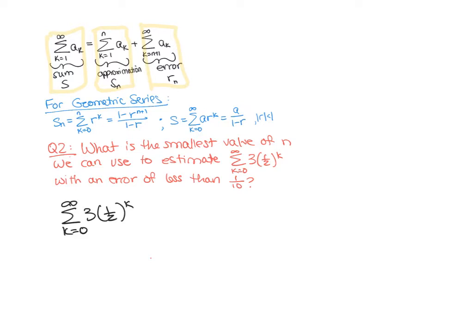Now we need to find a general formula that depends on n for our error. We know that r sub n is going to be S minus S sub n, and we know that S is going to be a divided by one minus r, so three divided by one minus a half, which was six we found in the last slide, minus S sub n.